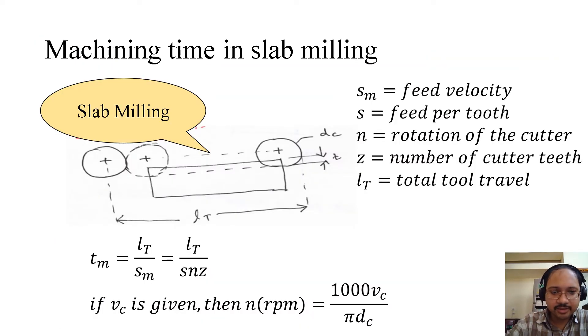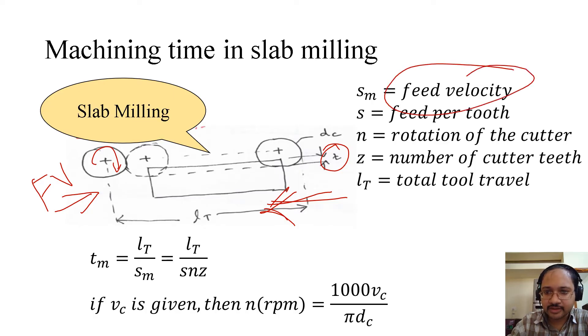Coming to the machining time in slab milling, this is again the front view. You can see this is the depth of cut, this is the cutter, and essentially the cutter was fixed where the feed was given to the workpiece in this direction. So sm is the feed velocity, s is the feed per tooth, n is the rotation of the cutter, z is the number of cutter teeth, and lt is the total tool travel.